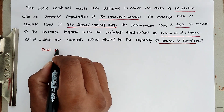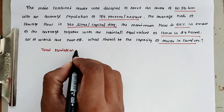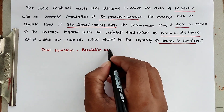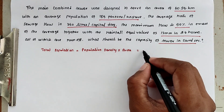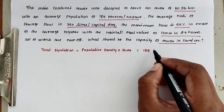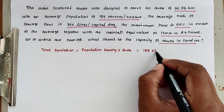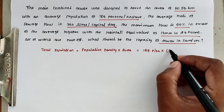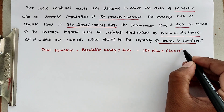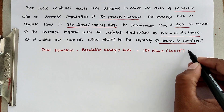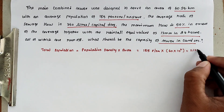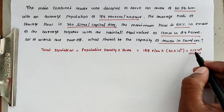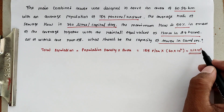Total population equals population density into area. The population density is 185 persons per hectare. The area is 60 square kilometers, which we convert into hectares — 60 into 10 squared. Now we get the value of 11.1 into 10 power 5 persons. So in 60 square kilometers, 11.1 × 10⁵ persons are living there.